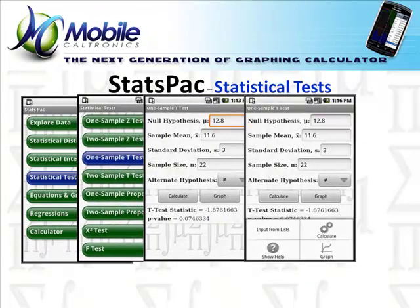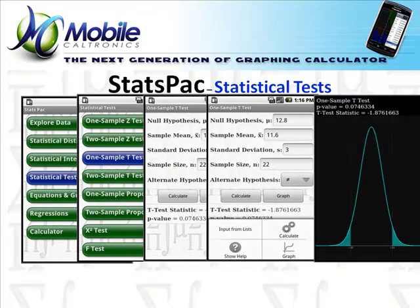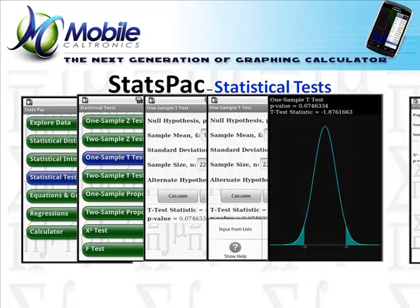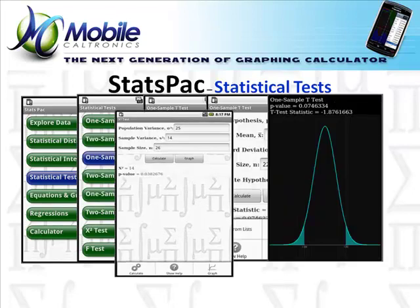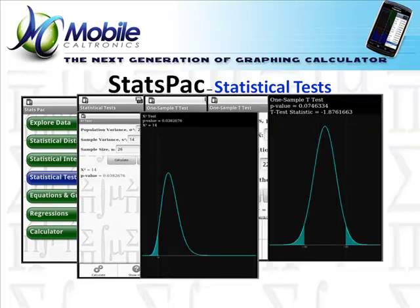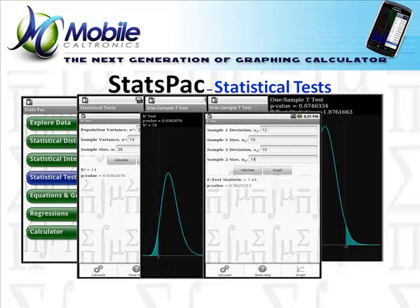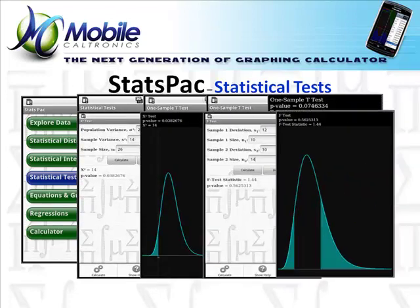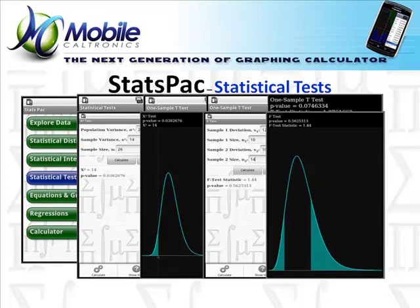The statistical test menu provides, in addition to the ones just mentioned, the chi-square and f-test. All of these come with a calculate and graph button, on-screen help, and the graphs are fully interactive.